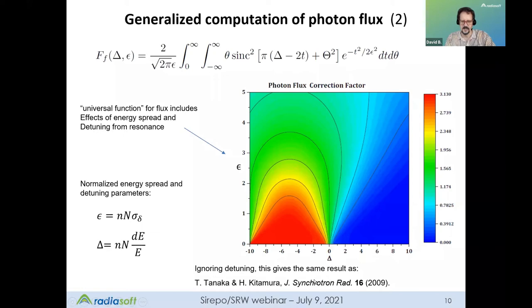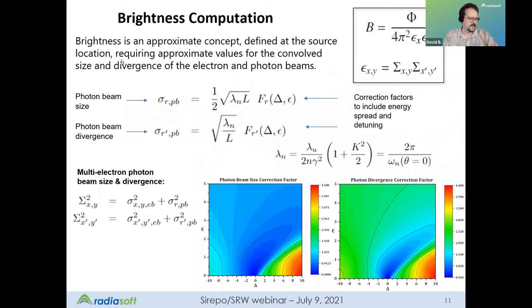And then the epsilon is a normalized energy spread of the electron beam. In these formulas, the lowercase n is your harmonic number, and the large n is the number of periods in the undulator. And this sinc squared you see in the function up here at the top, that's related to the natural shape of undulator radiation, which you'll see in the demo. And it is worth noting that back in 2009, Tanaka and Kitamura published a generalization that includes the energy spread of the electron beam, but they did not include deviation from energy. So if we assume no detuning, the formulas here are consistent with Tanaka and Kitamura. So if you look at this color contour plot of the photon flux, and you look at the center of the horizontal axis where capital delta is indicated to be zero, you can see over here on the right in this color map that that corresponds to about 1.565.